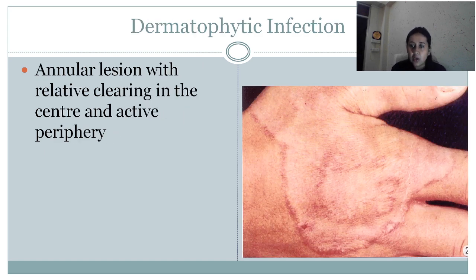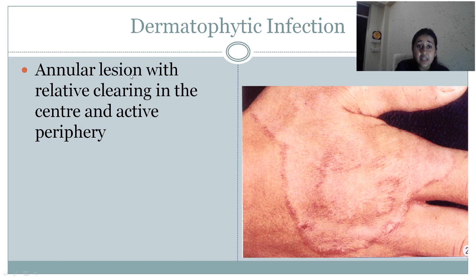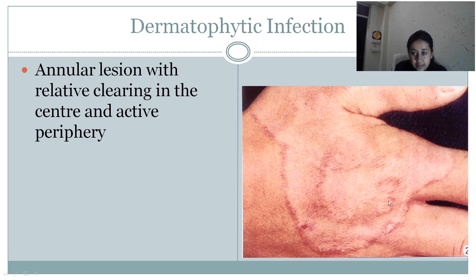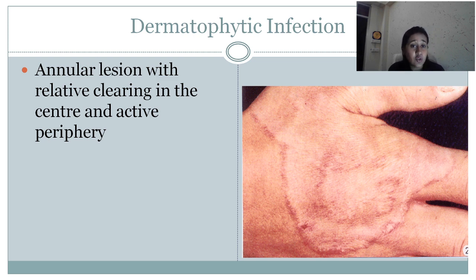Now coming to fungal infections. Dermatophytic infections are very common in general practice. The dermatophytic infection looks like an annular lesion with relative clearing in the center and fine superficial scaling. Dermatophytic infections are classified depending on the site: if present over the scalp it is tinea capitis, over the face it is tinea faciei, over the hand it is tinea manuum, over the foot it is tinea pedis, over the body it is tinea corporis, and if present in the flexors or groin it is tinea cruris. The presentation is the same — annular lesion with relative clearing in the center and active periphery or fine scaling.